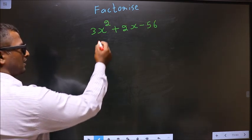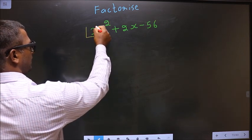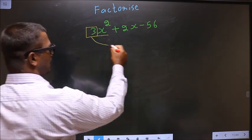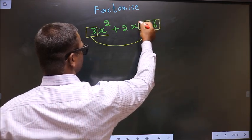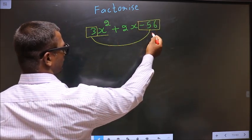The coefficient of x², which is 3, should be multiplied by the constant, which is -56. So 3 times -56.